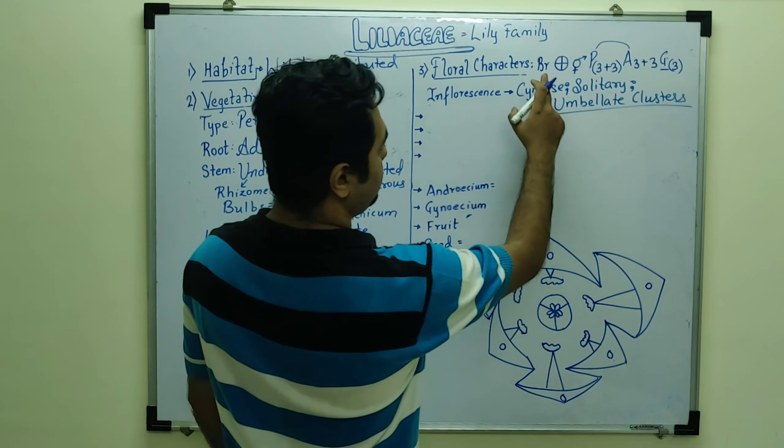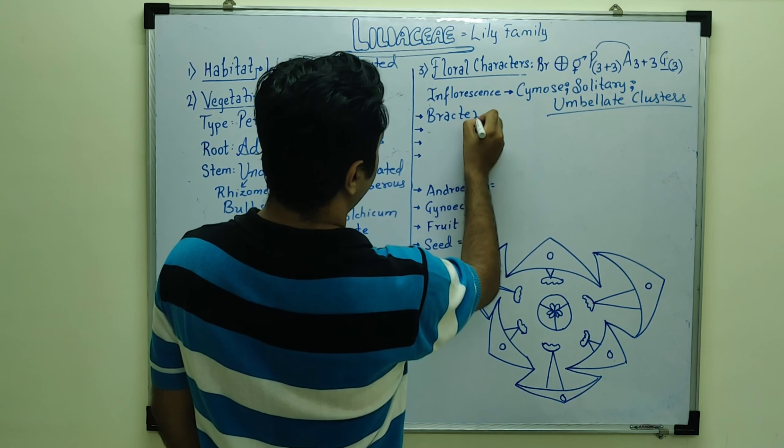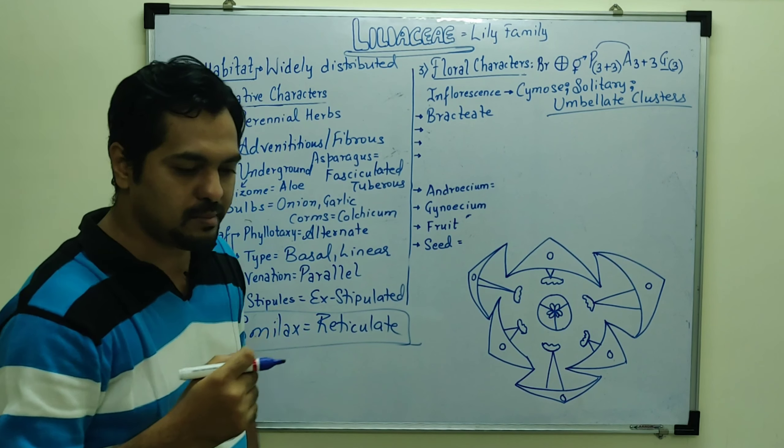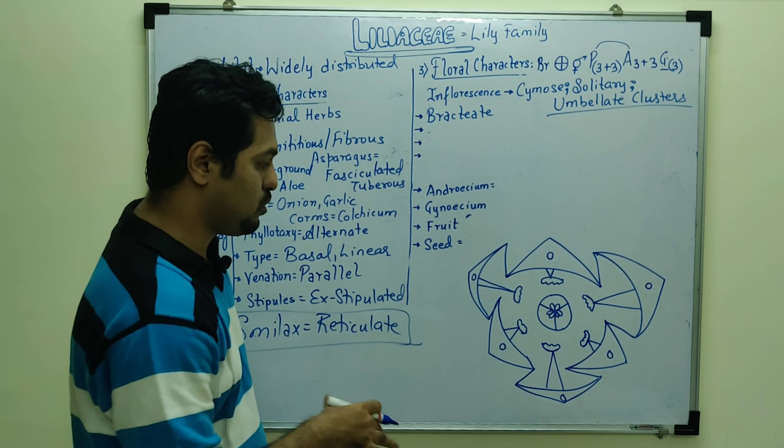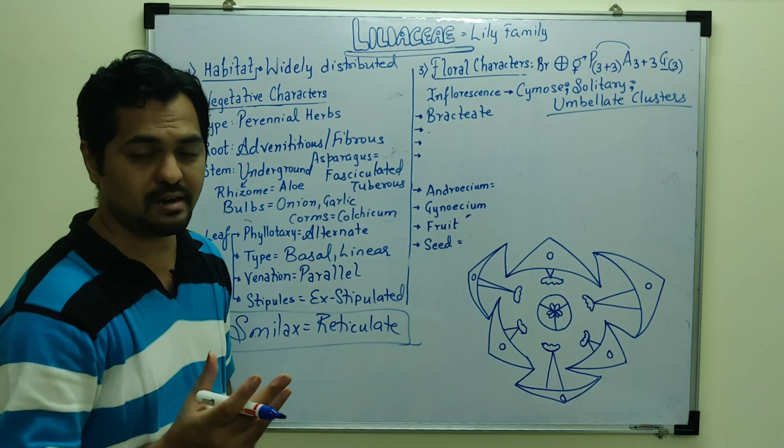Clusters of flower which is known as umbellate type of clusters which we can observe in inflorescence. And here is bract presence. So we can see as the bracteate flower. Now we have Fabaceae, Solanaceae bracteate mentioned.